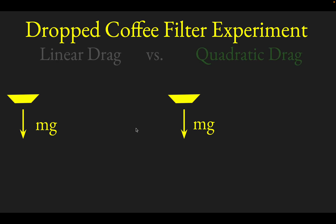One way of setting up this experiment is it can help you decide whether a linear drag model or a quadratic drag model is best for modeling air drag.